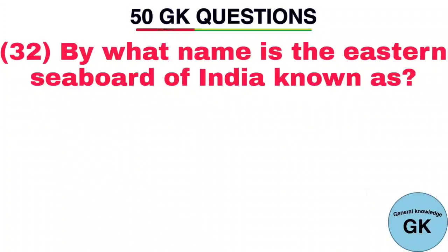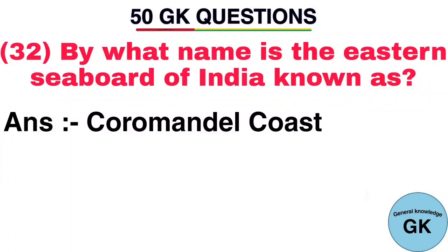Question number 32. By what name is the eastern seaboard of India known as? Answer: Coromandel Coast.